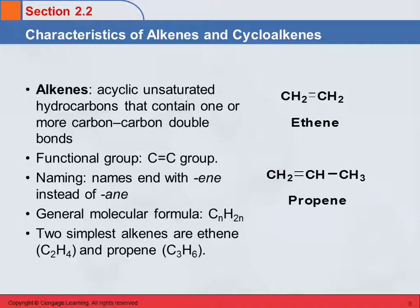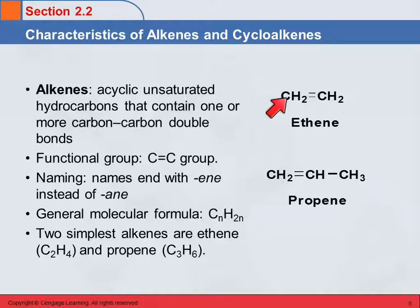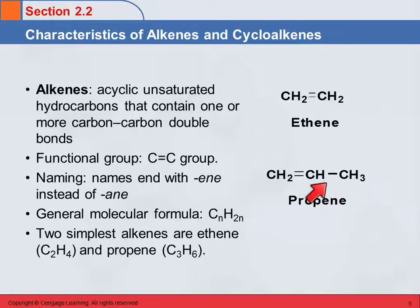We're going to talk about alkenes first. An alkene is an acyclic, unsaturated hydrocarbon that has one or more carbon-carbon double bonds. The functional group is that carbon-carbon double bond. Here are two examples of alkenes: a two-carbon compound that has a double bond, and a three-carbon compound with one double bond and one single bond.